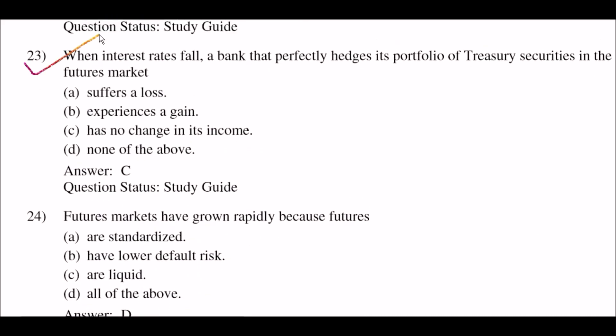Next question: when interest rates fall, a bank that perfectly hedges its portfolio of treasury securities in the futures market — option A: suffers a loss; option B: experiences a gain; option C: has no change in its income; option D: none of the above. The right answer is option C: has no change in its income.